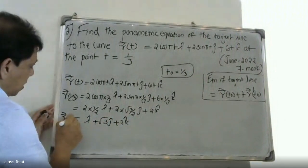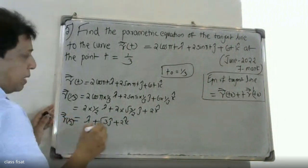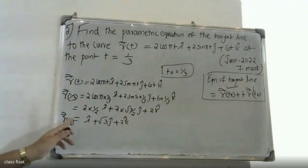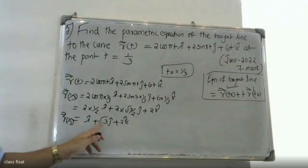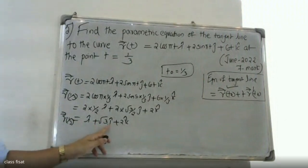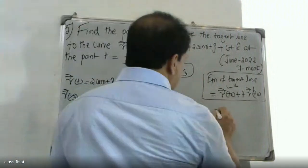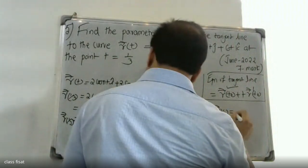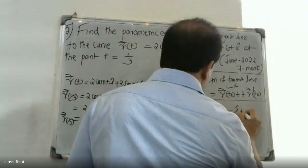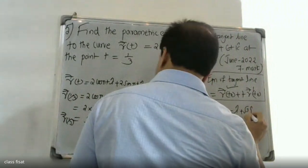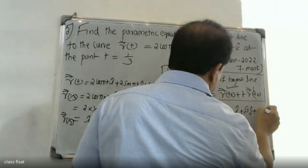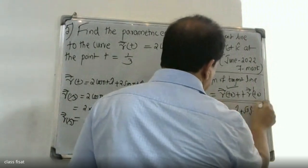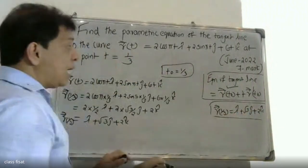r(t₀) at t₀ = 1/3 gives the value i + √3·j + 2k. So r(1/3) = i + √3·j + 2k.